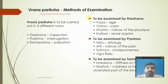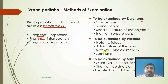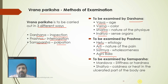Now seeing the Tributa Pariksha - Vrana Pariksha is carried out in 3 different ways: Darsana (inspection), Prashna (interrogation), and Samsparsha (palpation). By Darsana we assess Vaya (age of patient), Vrana, Sharira, and Indriya. By Prashna we assess Hetu, Arthi (nature of pain), Satmya, and Agni Bala. By Samsparsha we assess Mardava (stiffness or hardness of the ulcer), Shaitya, coldness or heat in the ulcer part, and other body areas.